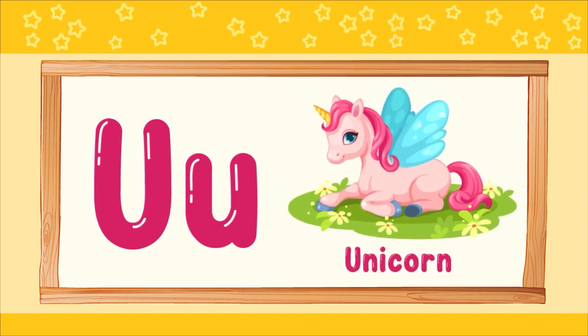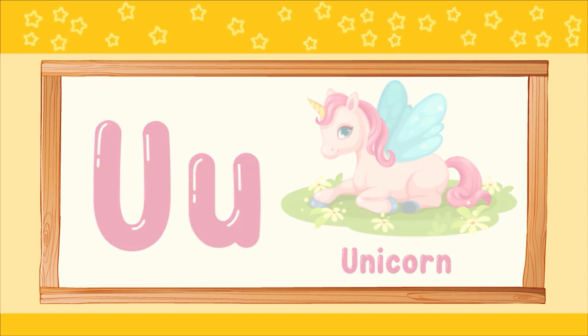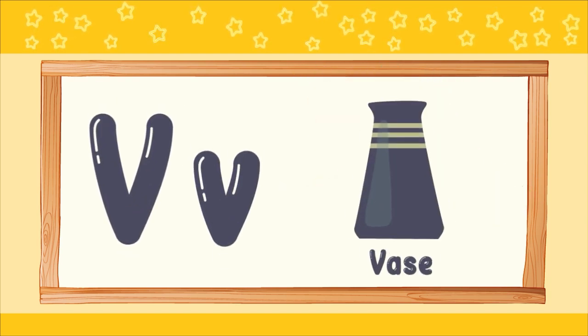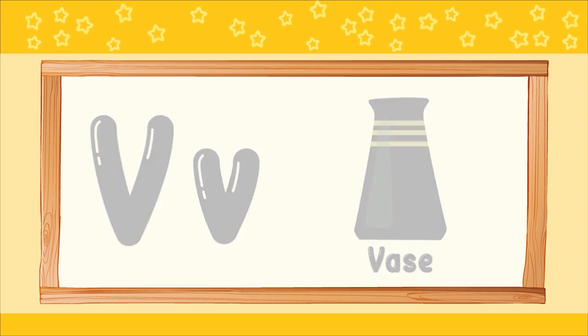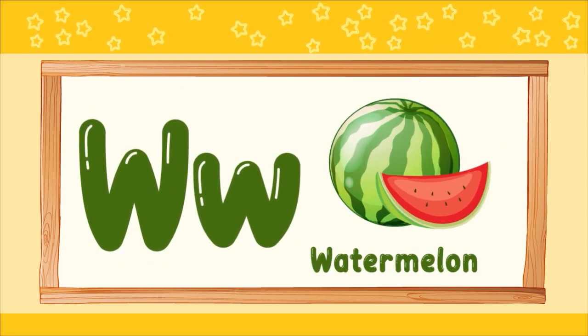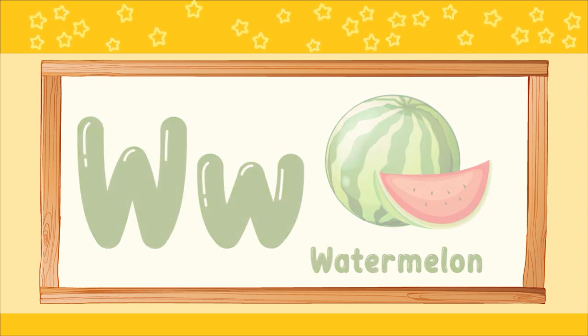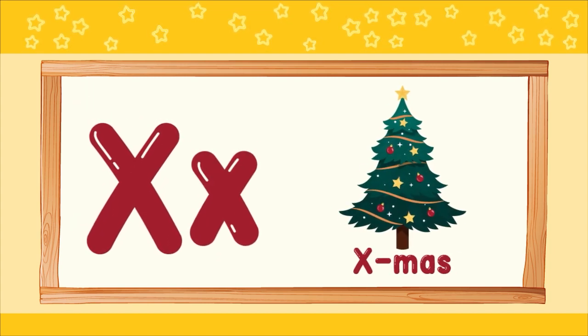U. U for unicorn. V. V for vase. W. W for watermelon. X. X for X-mas.